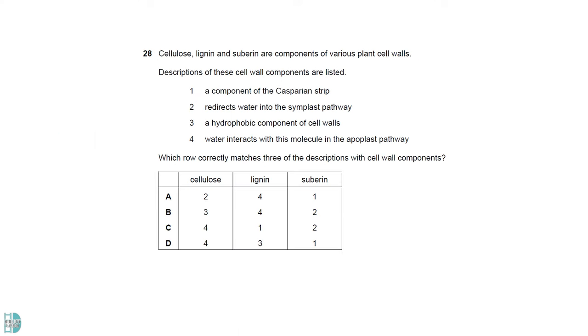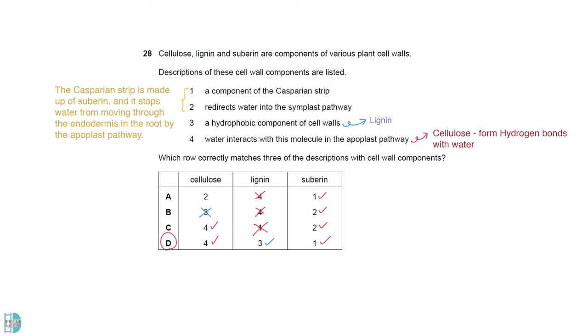The casparian strip is made up of suberin. And it stops water from moving through the endodermis in the roots by the apoplast pathway. So 1 and 2 can both be the description of suberin. 3 is lignin, since it is hydrophobic. 4 refers to cellulose, a carbohydrate that can form hydrogen bonds with water molecules.